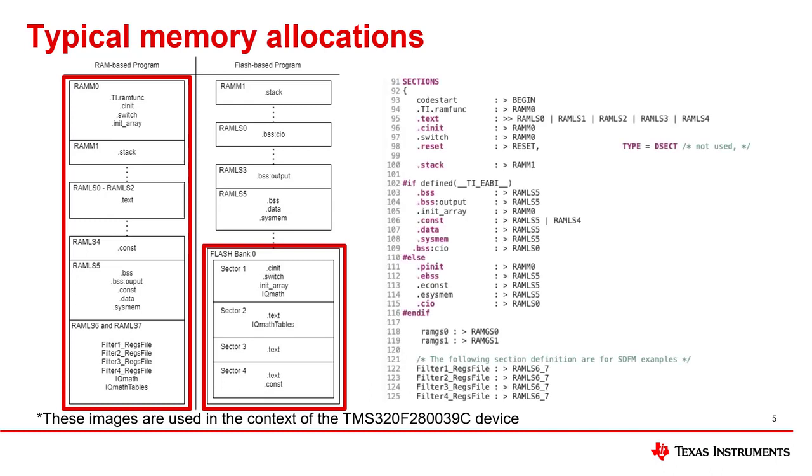The next image is source code from a linker command file for the F280039C device. The linker will use these instructions to define various memory locations such as flash, RAM, and ROM.